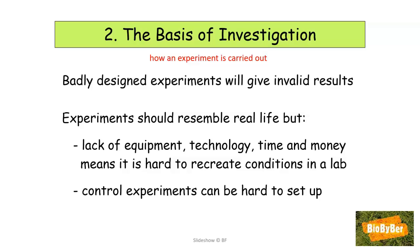Control experiments can also be hard to set up. For example, if I want to investigate the effect of burning too much fossil fuel leading to global warming on planet Earth, I should have a control — another planet with the same conditions as Earth but no humans. That is impossible. So the basis of the investigation, how the experiment is carried out, can limit the use of the scientific method.